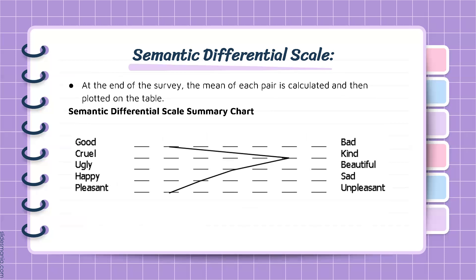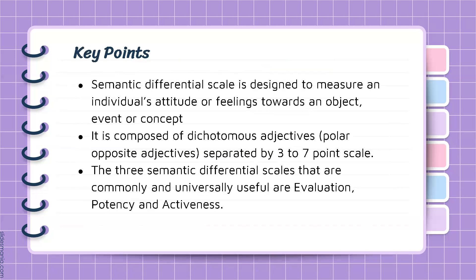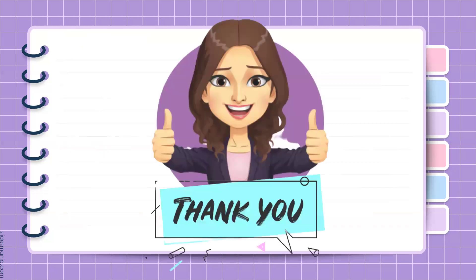At the end of the survey, the mean of each pair is calculated and then plotted on the table. This is an example of a semantic differential scale summary chart. This ends our discussion on semantic differential scale. Key points to remember: the semantic differential scale is designed to measure an individual's attitude or feelings towards an object, event, or concept; it is composed of dichotomous adjectives separated by a 3 to 7 point scale; and the three commonly and universally useful semantic differential scales are evaluation, potency, and activeness. Thank you for watching and see you in my next videos.